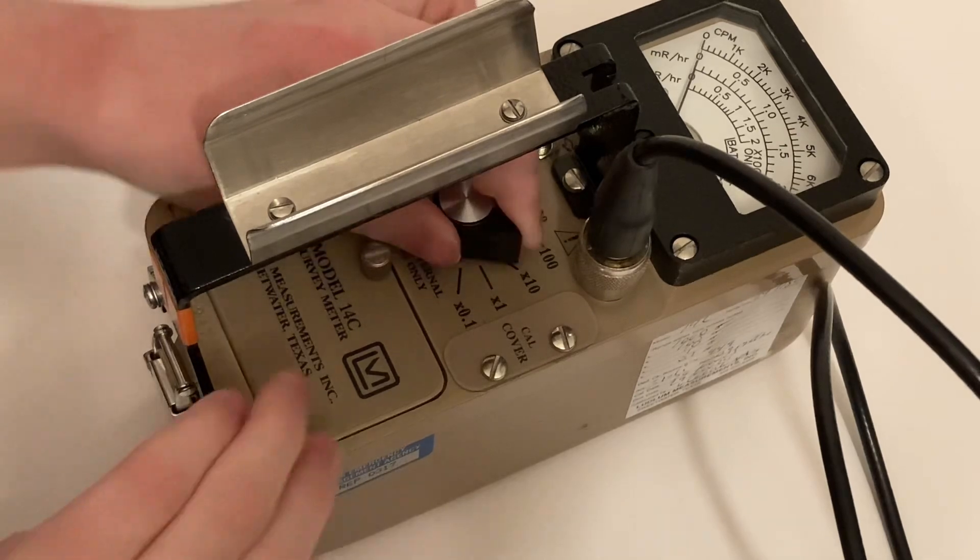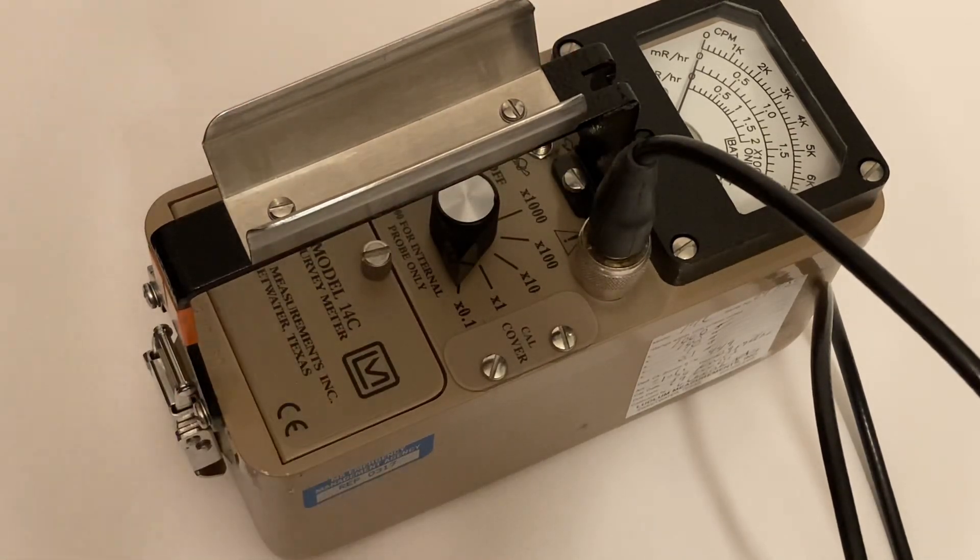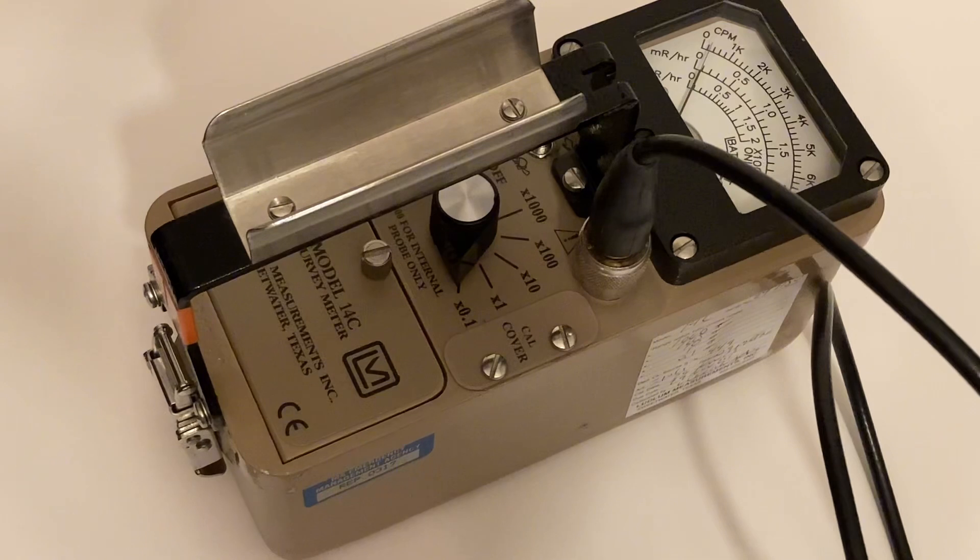Turn the rotary switch from the off position to the x0.1 position, which is the lowest range on the survey meter. You will hear occasional beeps from the survey meter just as a result of background radiation.